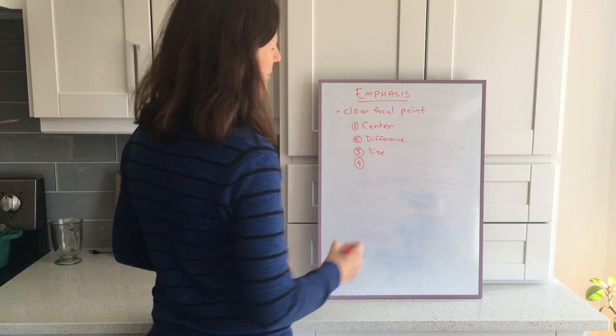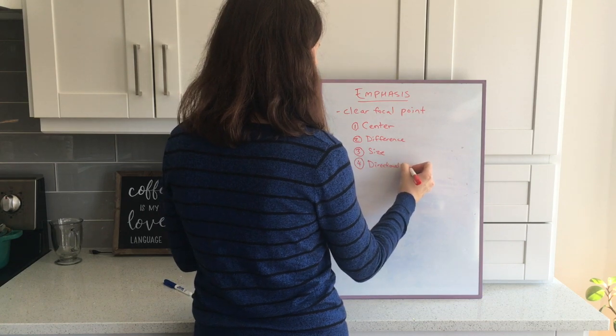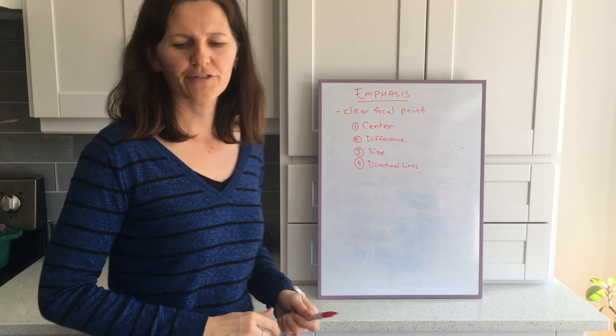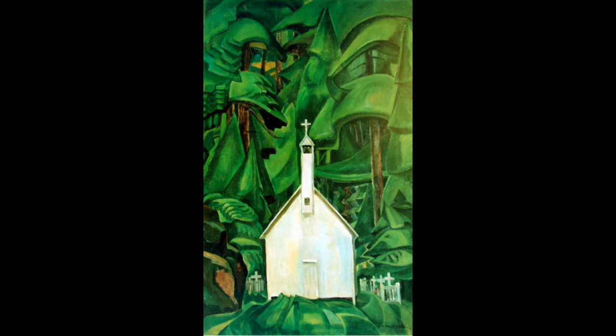There's one more way to achieve emphasis, and you have to look a little more carefully. We refer to it as directional lines. Have a look carefully at the lines that go from the bottom of the piece - do you see how they're all pointing toward the front door? Those are directional lines. There are also directional lines in the forest - those big sweeping organic shapes act like arrows pointing your eye right to the center, to the cross at the top of the steeple.